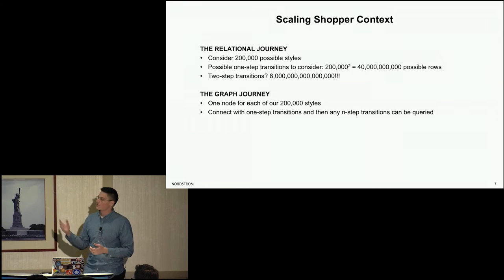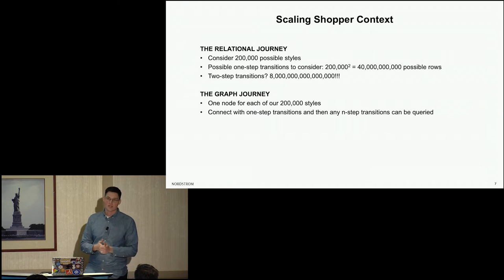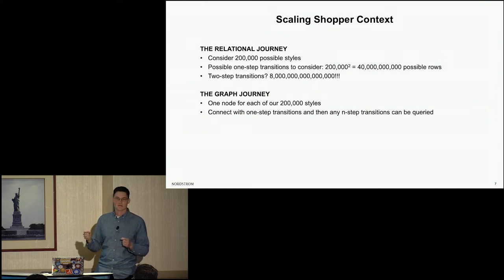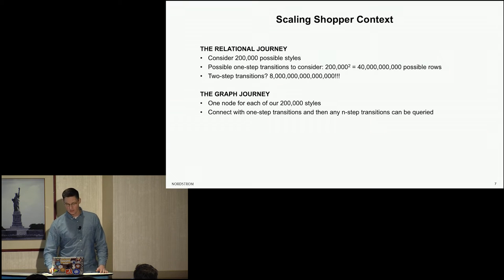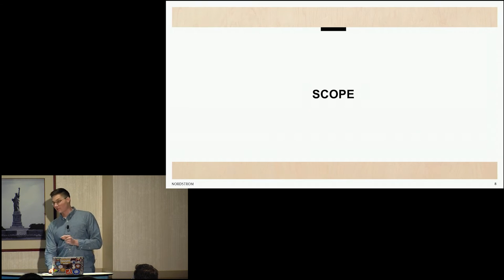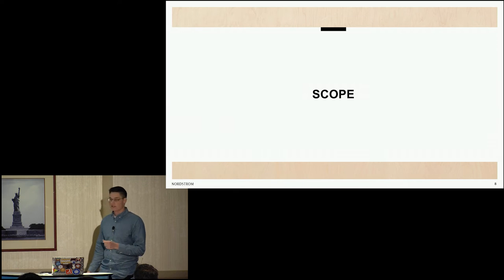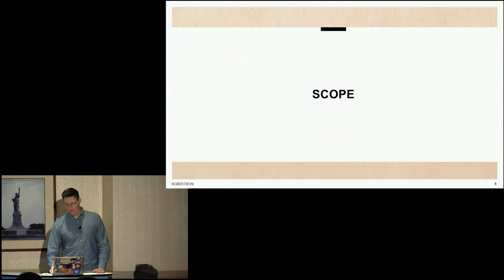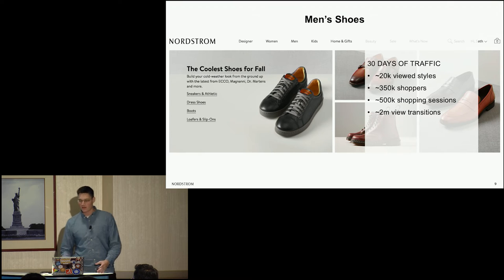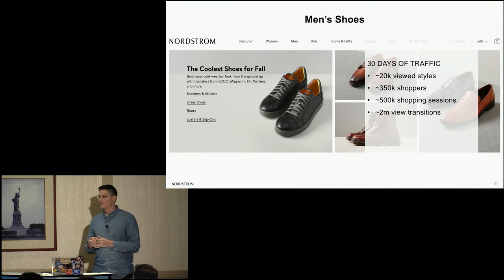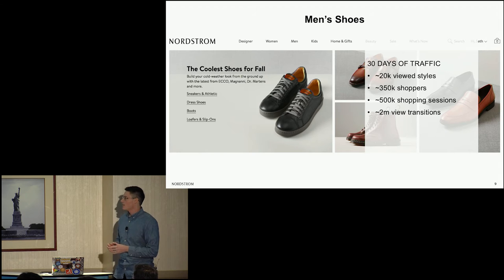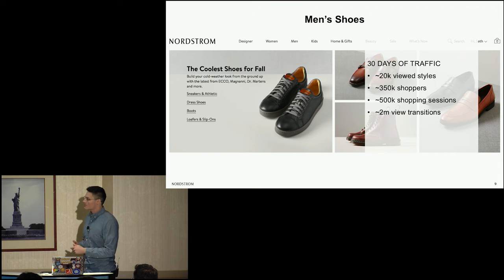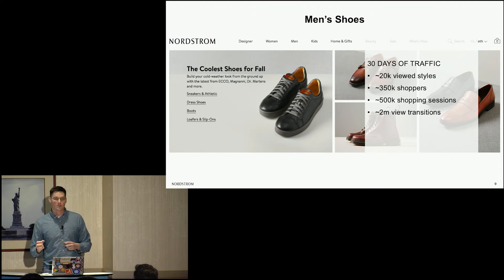Graph, on the other hand, is perfectly suited for mapping a customer journey like this. Instead, you just need one node for each of your styles and then record relationships between them as they occur. A quick note on the scope of this hackathon project: I think it is best practice with any new data adventure to pick a smaller sample. So our team tackled a sample from 30 days of traffic from our men's shoes category on the site, which covered about 20,000 unique styles and two million transitions between those styles.